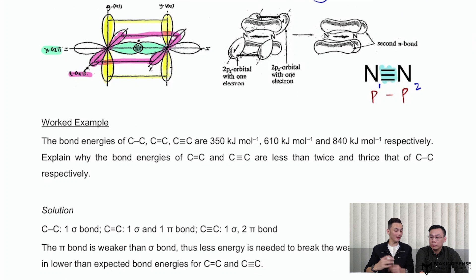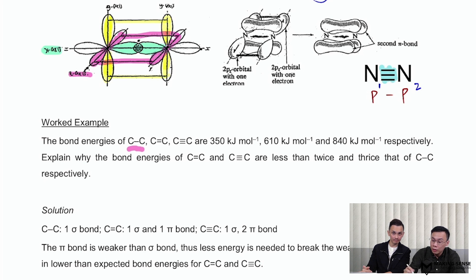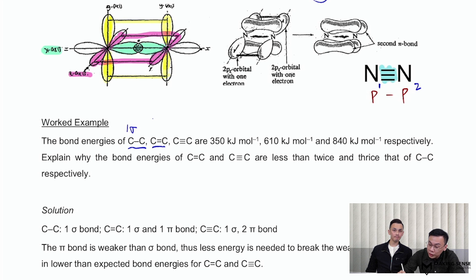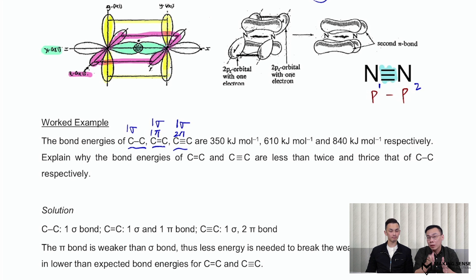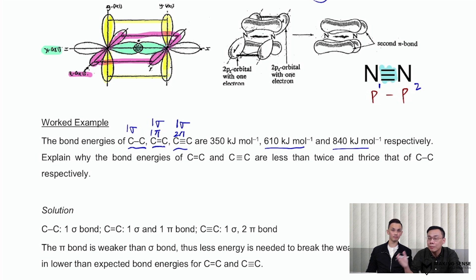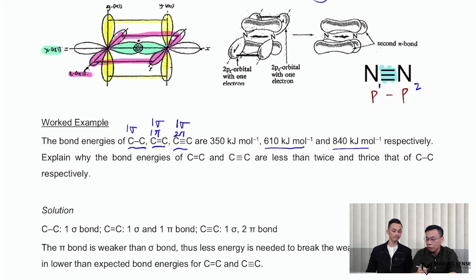The worked example gives the bond energy of a carbon-carbon single bond, double bond, and triple bond. For a single bond there is only one sigma bond; for a double bond, the first bond is sigma and the second is pi; for a triple bond, the first is sigma and the remaining two are pi bonds. Since pi bond is weaker than sigma bond, the bond energy of the double bond is not twice that of a single bond — it's less than two times. Similarly, the triple bond energy is less than three times the single bond energy.